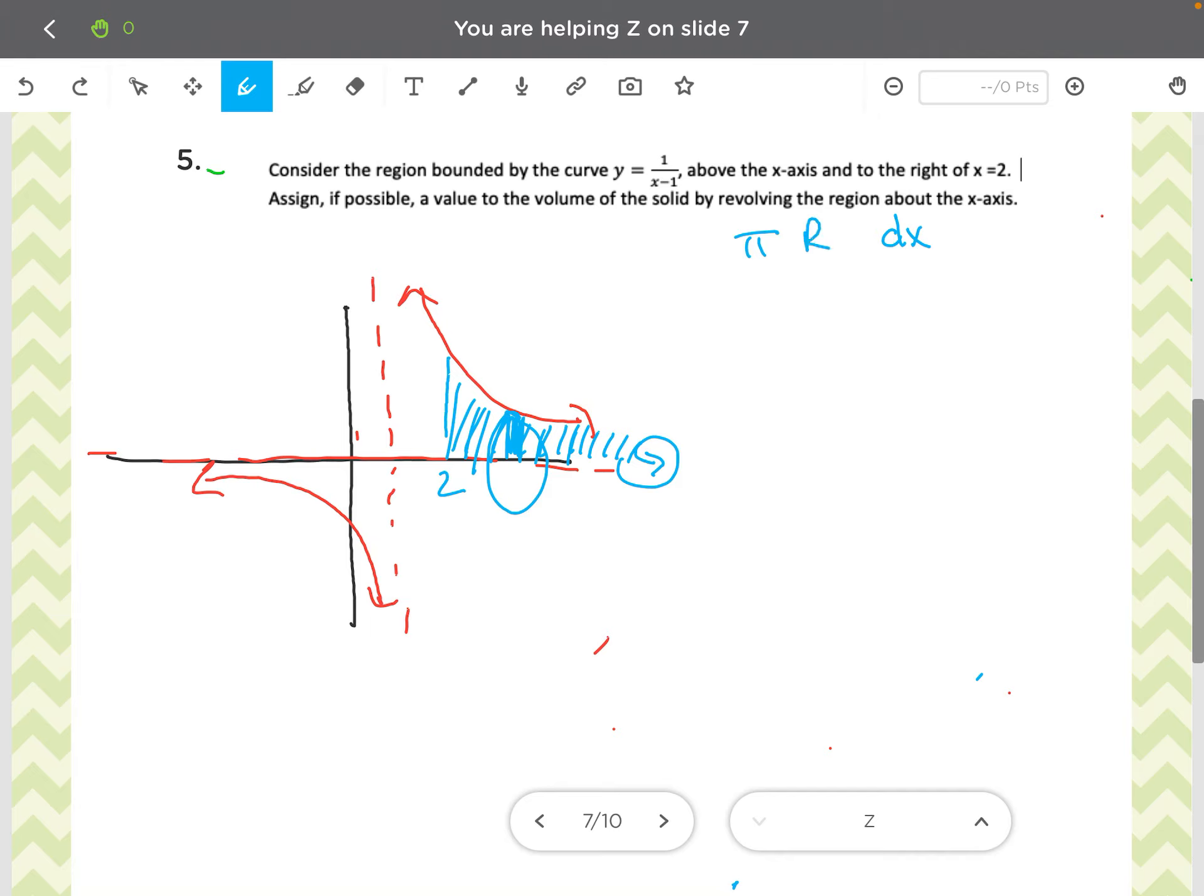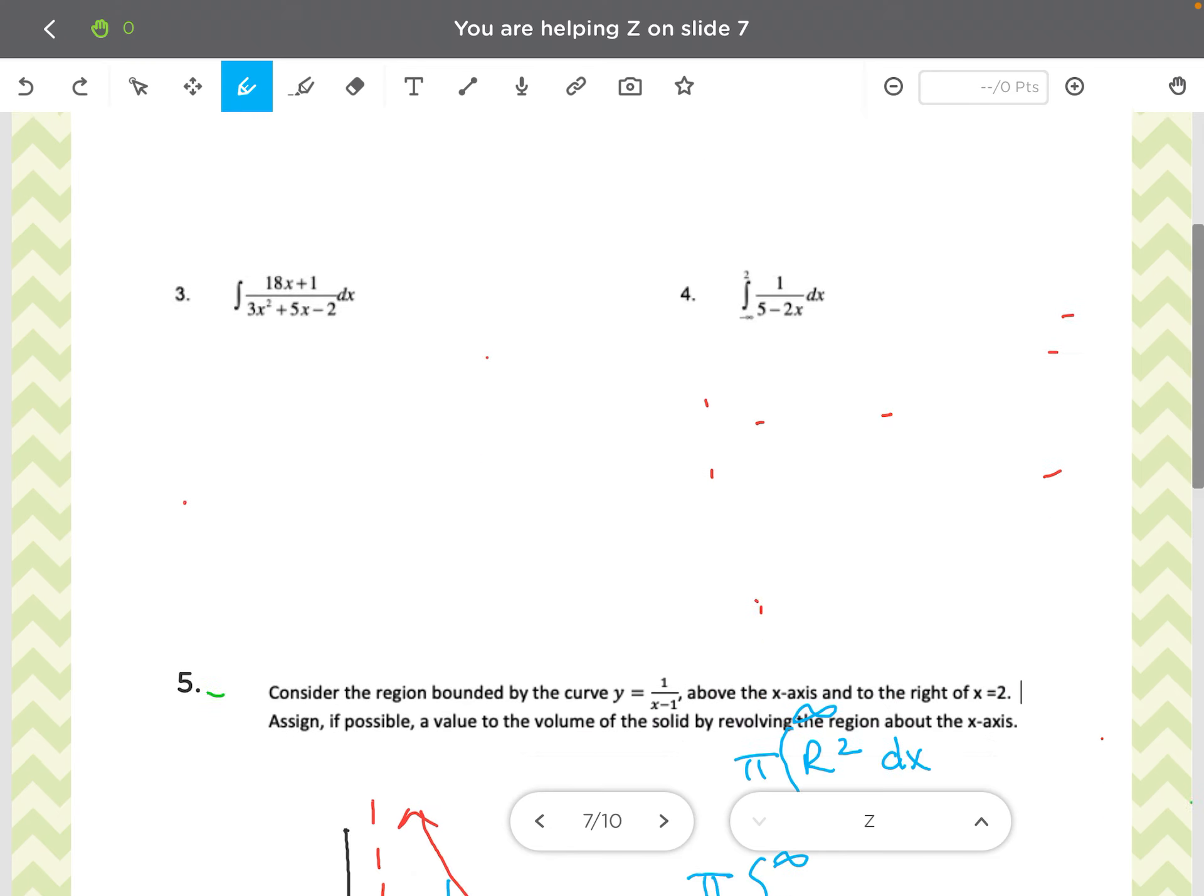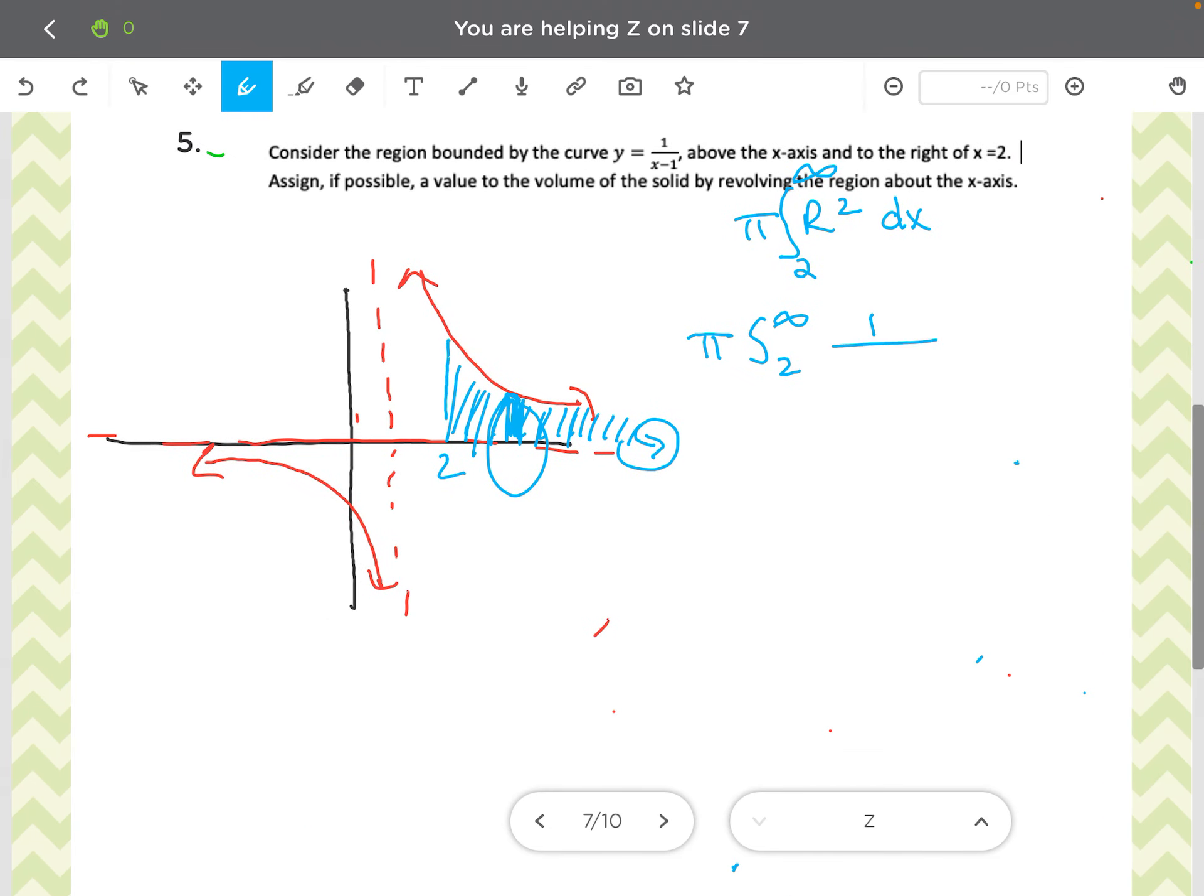And there's no gap between the region and your axis of revolution. So we're thinking just pi r squared. Your r just happens to be the height of that rectangle. And our bounds are going to go from 2 all the way to infinity. So let's replace that r. Your r is just really 1 over x minus 1, squared, pi r squared dx.